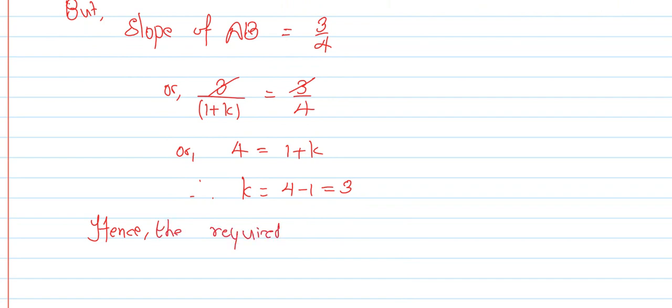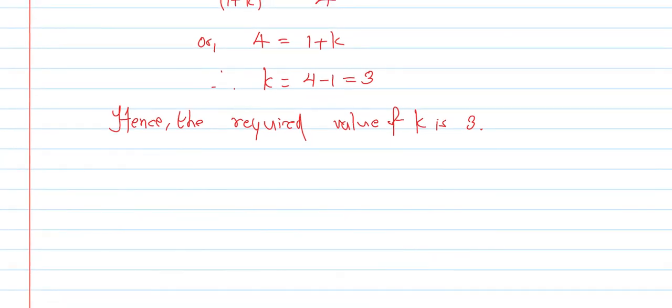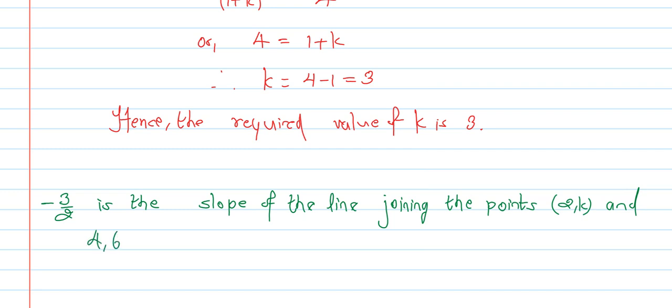Therefore k equals 4 minus 1 equals 3. Hence the required value of k is 3. Next question: -3 by 2 is the slope of the line joining the points (2, k) and (4, 6).